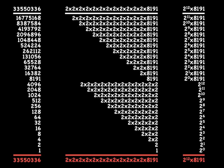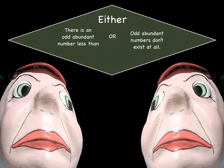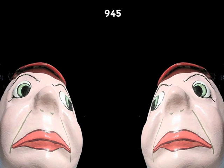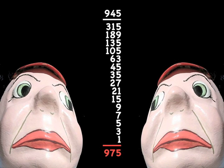Here's a question: which of these is true — there is an odd abundant number less than 1000, or odd abundant numbers don't exist at all? Try to solve that. Hopefully you've discovered that there is one odd abundant number less than 1000, and that is 945. Let's look at all the proper divisors of 945 — they add up to 975.